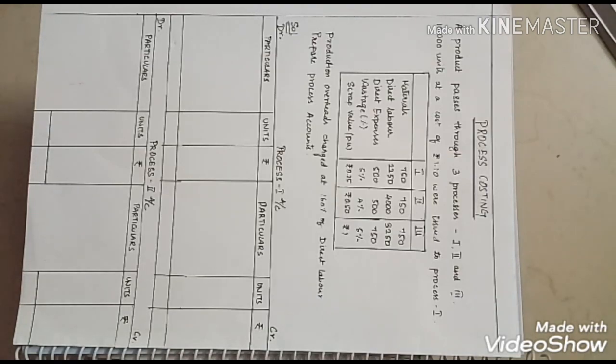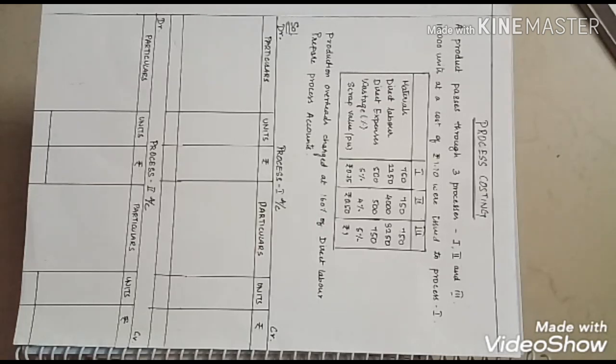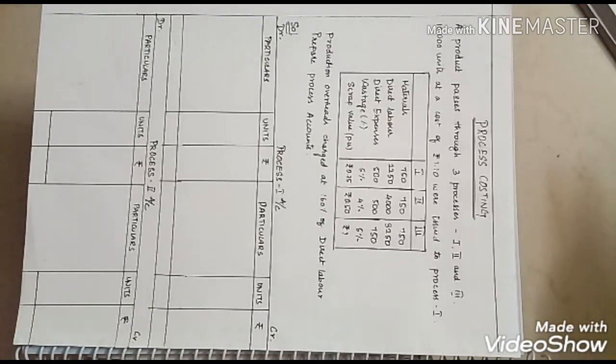Where do we use process costing? Process costing is used in industries where the process of manufacture is divided into two or more processes. Using process costing, we can find the total cost and unit cost of each and every process.